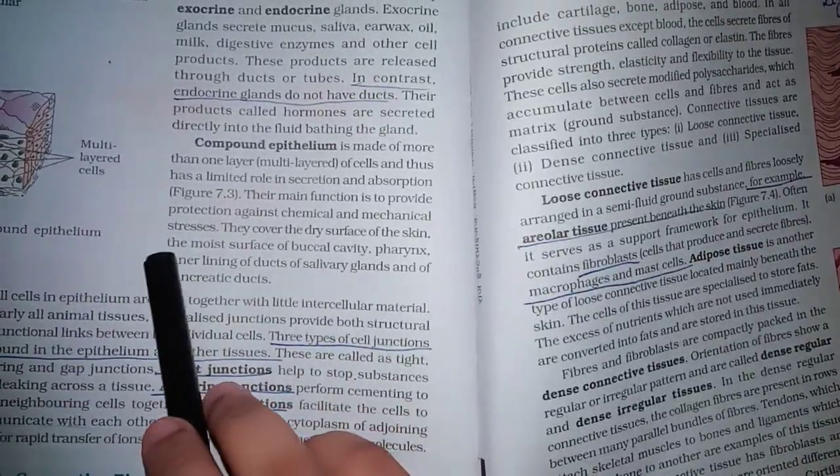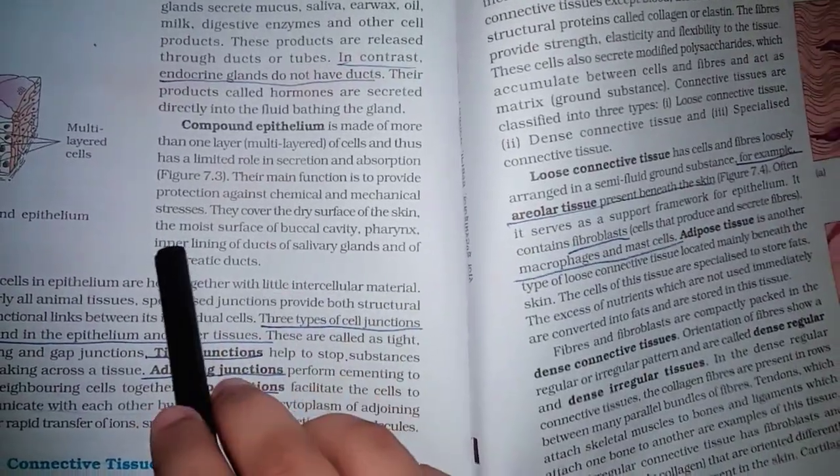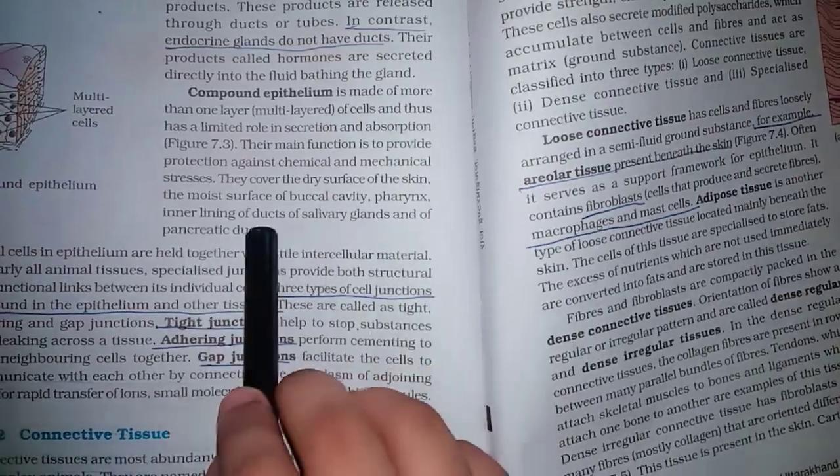They cover the dry surface of the skin, the moist surface of the buccal cavity, pharynx, and inner lining of ducts of salivary glands and pancreatic ducts.